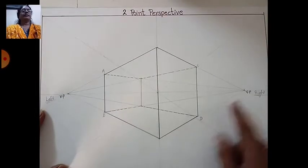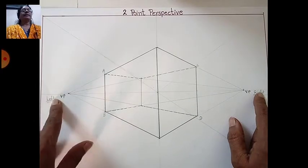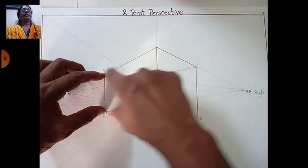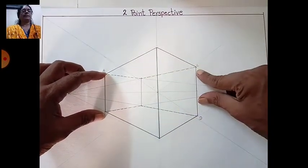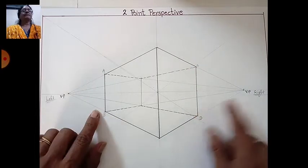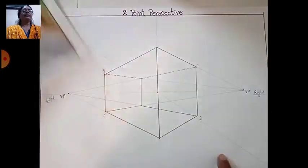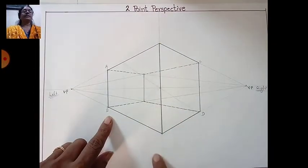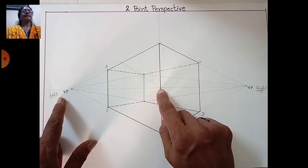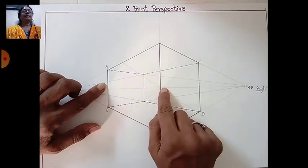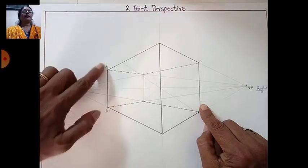Your two-point perspective object is ready. This is the two vanishing points, and the lines go big to small here, and big to small here also. This is a 3D object but in two points. This is one-point perspective and this is two-point perspective — it will help you in architecture and engineering drawing. This is the center point; make it 8 centimeters and 6 centimeters and draw the vertical line.